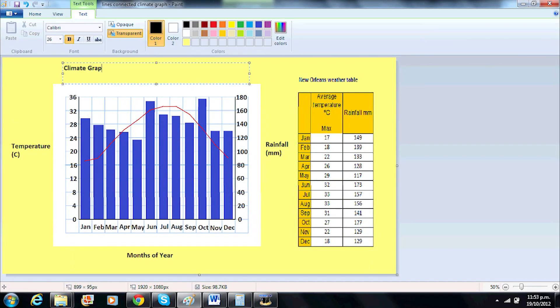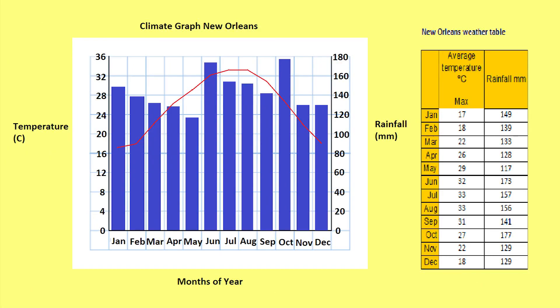Give your graph an appropriate title. Now we have finished, observe any patterns from the data. The following patterns can be identified from this graph: New Orleans has high rainfall and temperatures in the summer months and lower rainfall and cooler temperatures in the winter months. New Orleans has a maximum average temperature range from 17 degrees Celsius to 33 degrees Celsius.